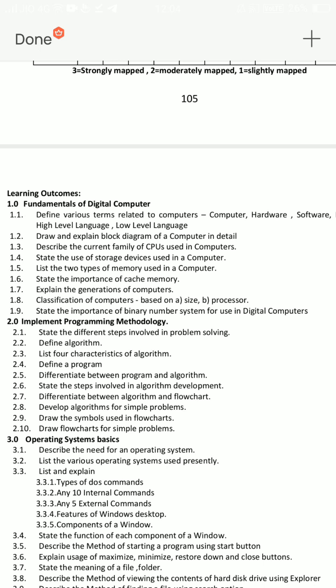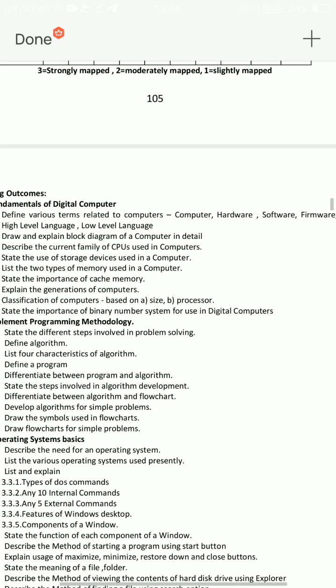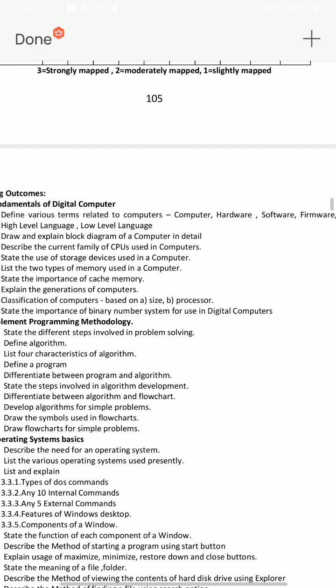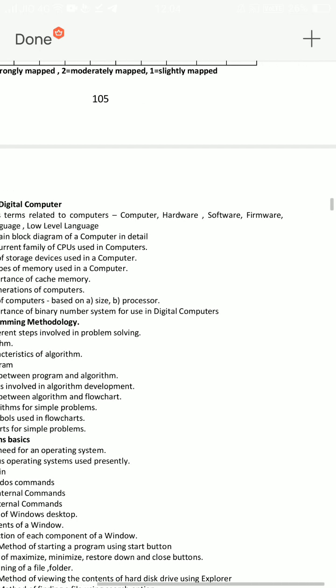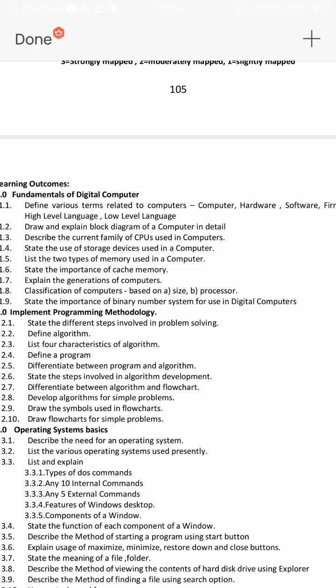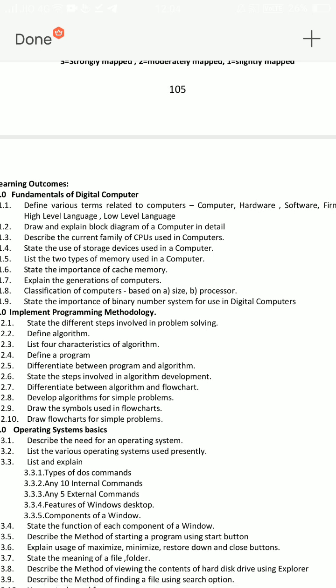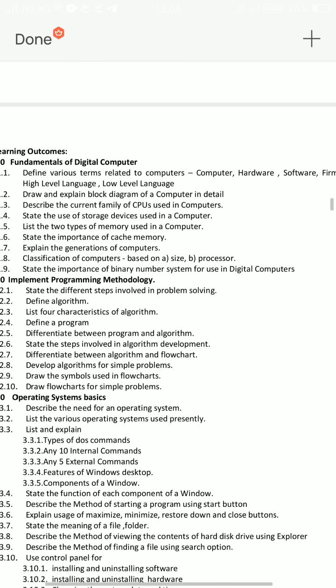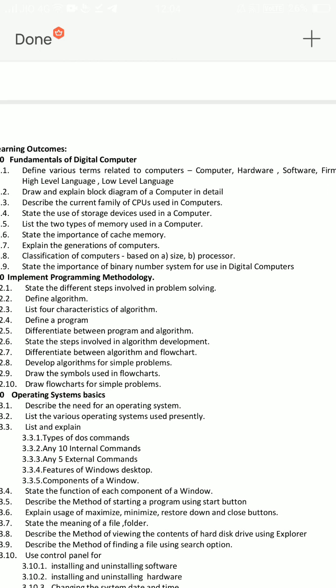Important essays: you will choose the first thing, then try to explain the short terms. The definitions: computer, hardware, software, high-level language, and low-level language. What should I tell you? It will look like different characters — this is a short term. Then I will test two types of memory used in a computer.